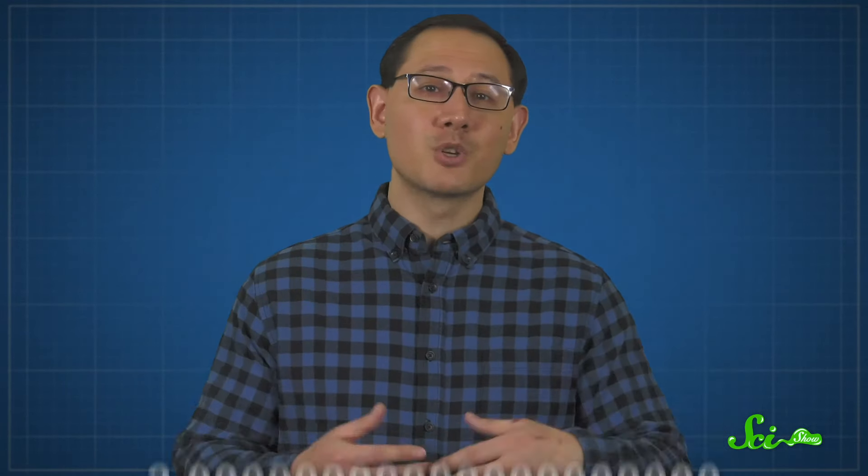And today, it's less than a quadrillionth. That means we know that the exponent in Coulomb's Law is 2 to nearly 20 digits. So Coulomb's Law has stood the test of time so far.